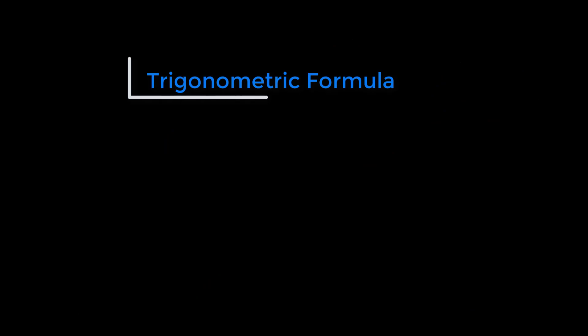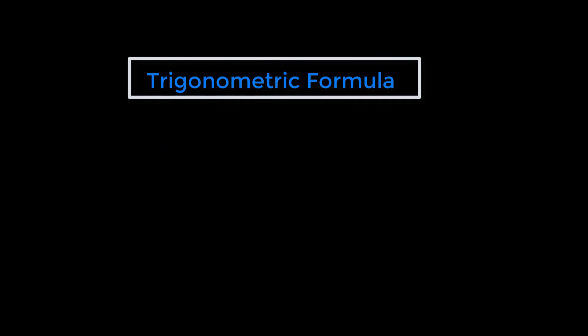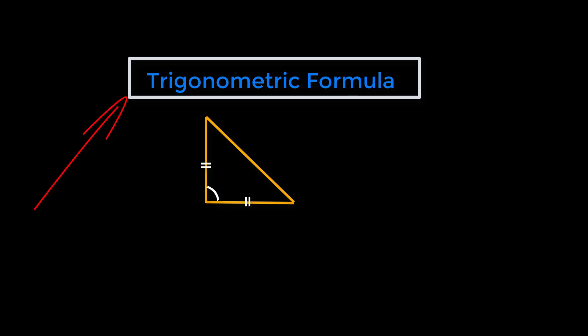We have only one formula left: the trigonometric formula. Whenever we are given sides along with angles in a stimulus, we will have to apply this formula. Remember: sides along with angles. That's all for today — thanks a lot for watching this tutorial.